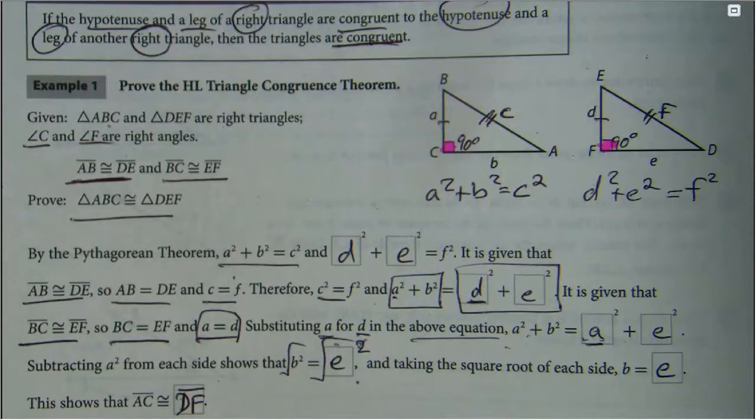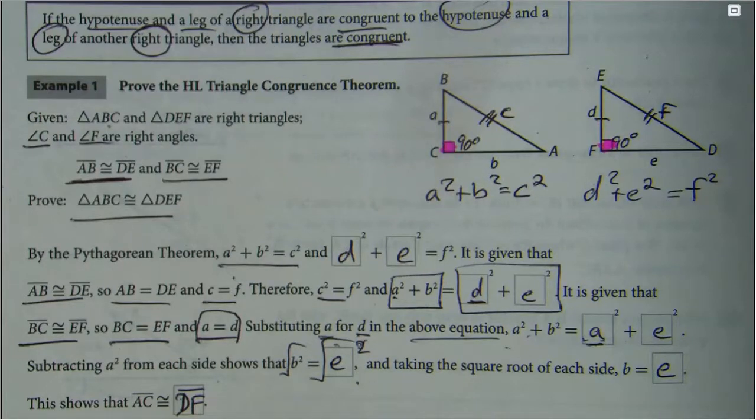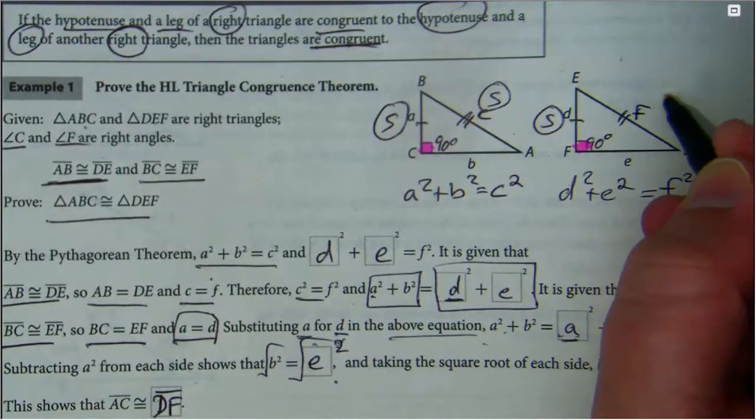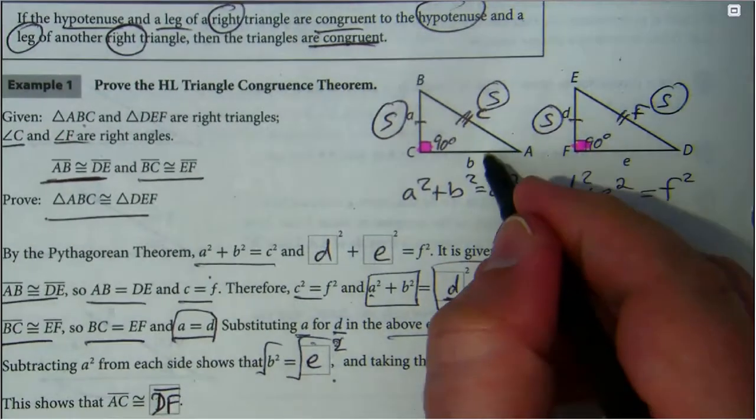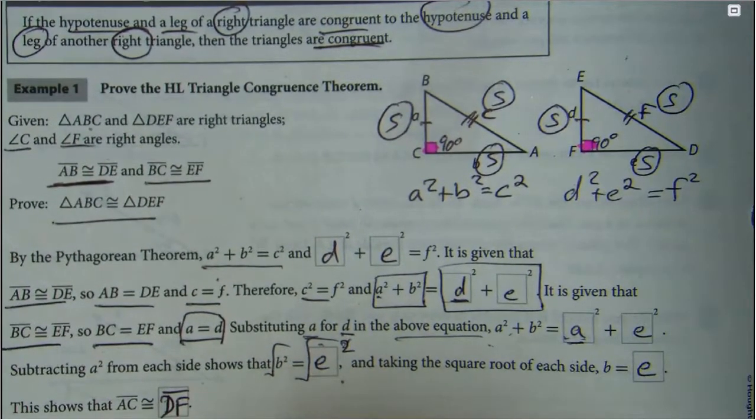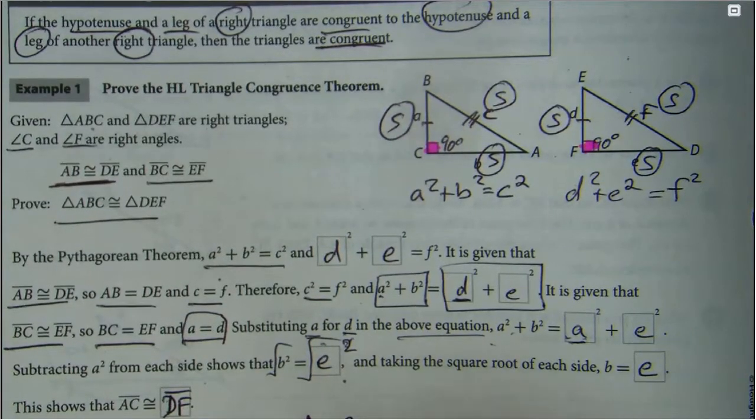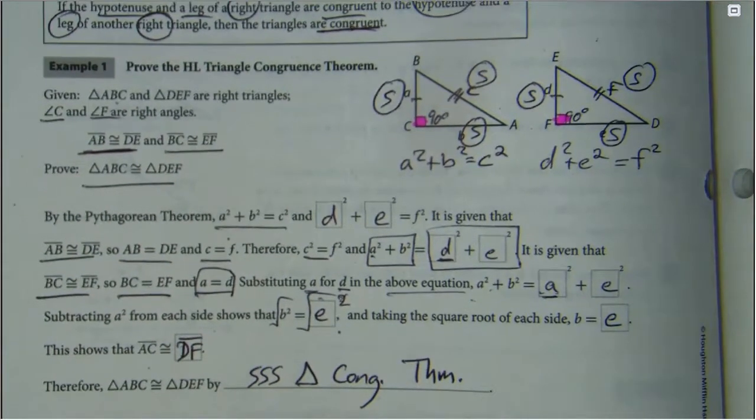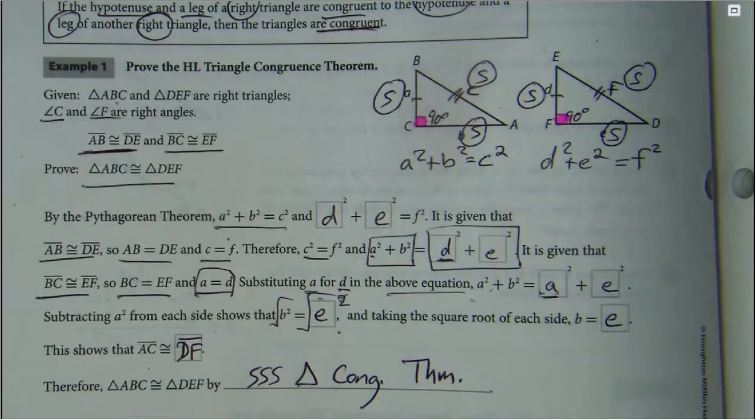That shows that AC is congruent to DF. Therefore these two triangles are congruent by—hold on, it's not by the HL triangle congruence right now. What did we use? We used this side here, this side here, we just proved that this side is congruent to this side. So we actually used side side side triangle congruence.